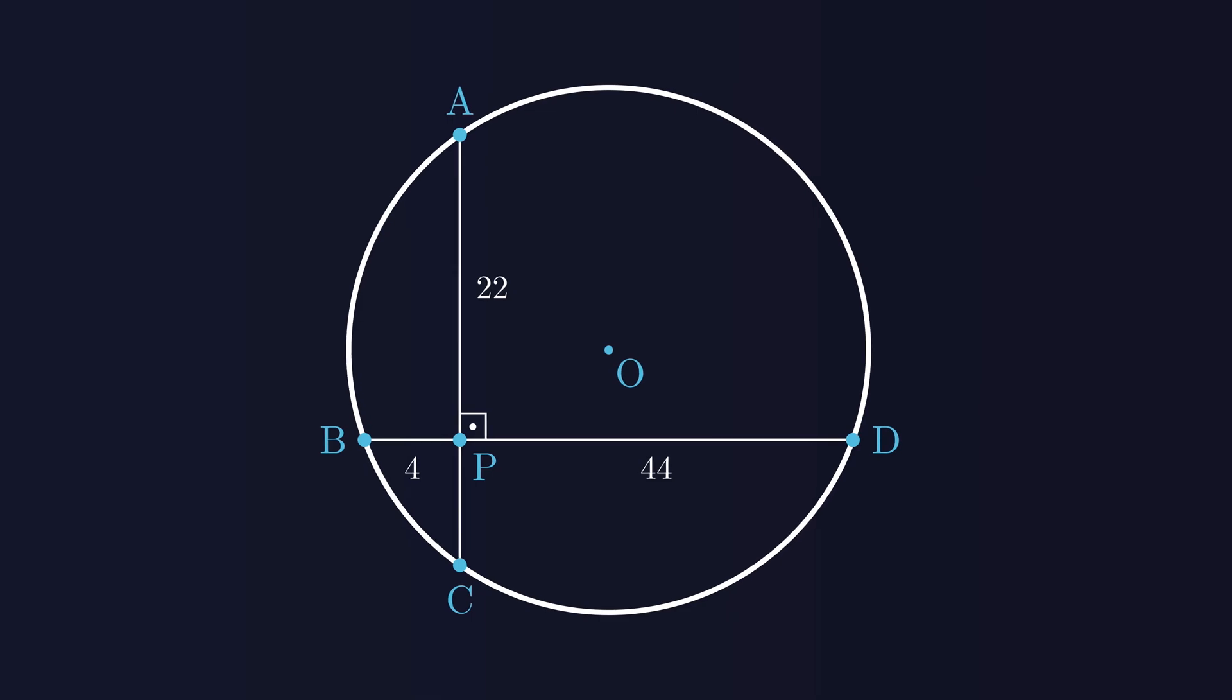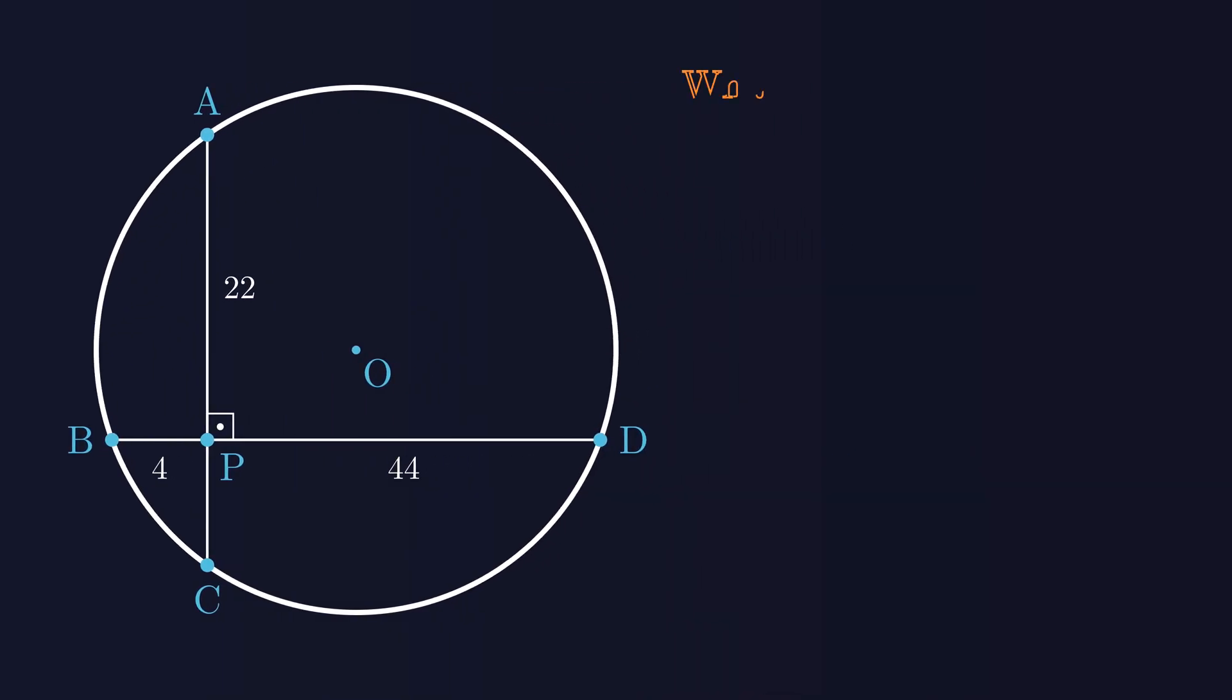Let's imagine we have a circle with two chords that intersect at a right angle. Point P is where these two chords cross, dividing them into four segments. The lengths of three of those segments are given. We're asked to find the radius of the circle.